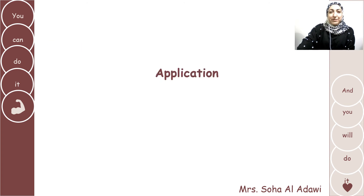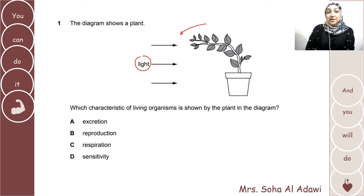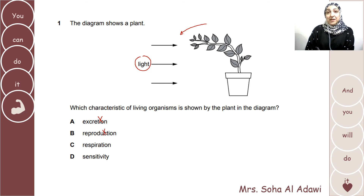Let's do some application. The diagram shows a plant — what characteristic of living organisms is shown? There is light, which acts as a stimulus, and the plant is bending toward it. It's not excretion, not reproduction, not respiration. This is sensitivity, where the plant is responding toward a stimulus which is sunlight.